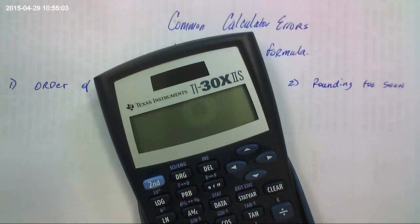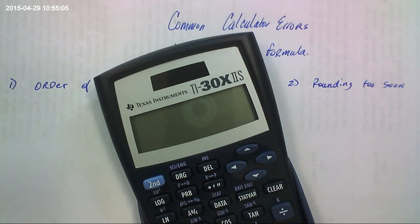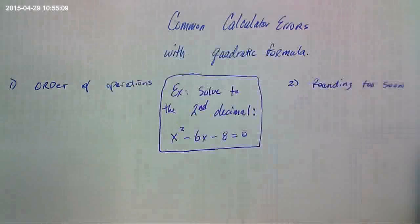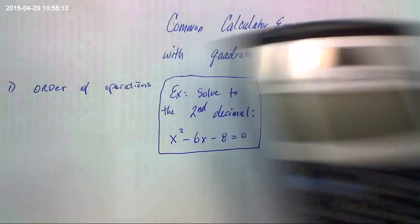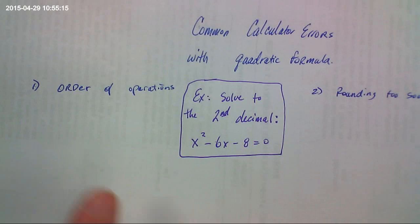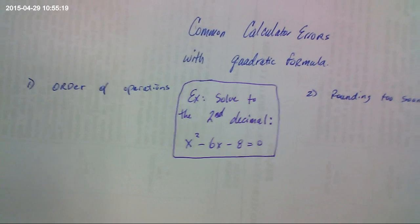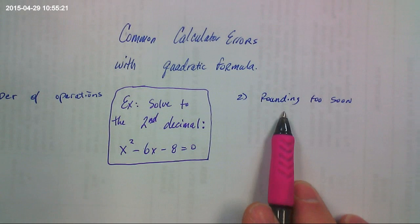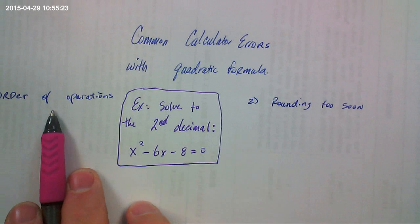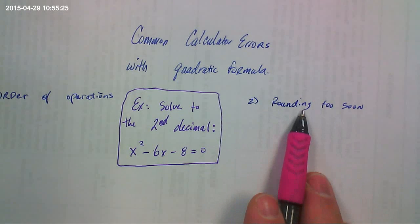For Cambridge Math, you're allowed to use this calculator. The way different calculators are programmed, sometimes they change the order of operations. But for this calculator, one of the most common mistakes is in using the order of operations. The other mistake is people rounding too soon. We're going to do this one, talk about how to avoid this mistake, and then talk about how to avoid this mistake.